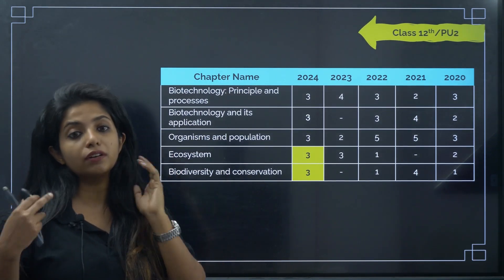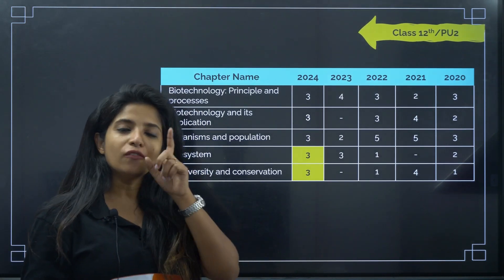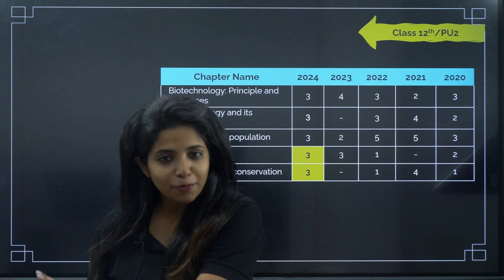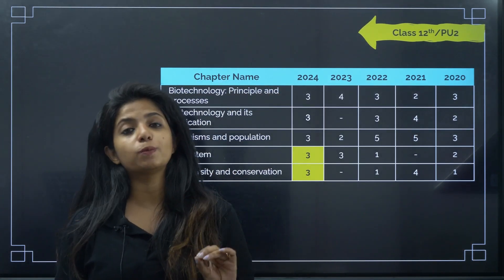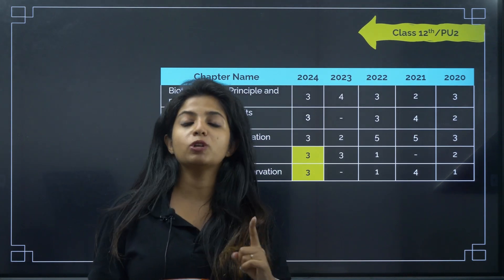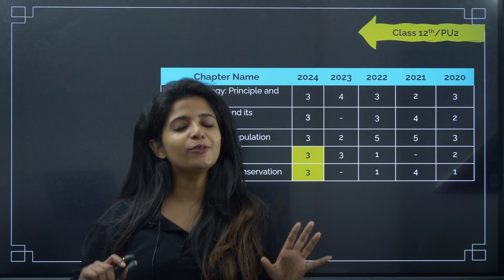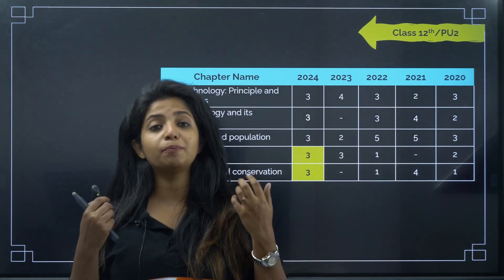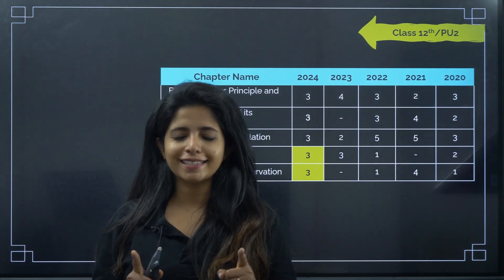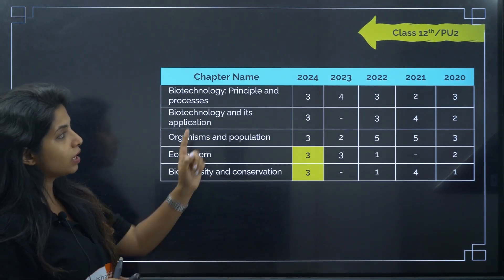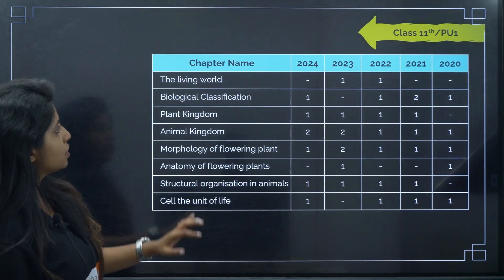Some chapters may give recurrent questions every year, but that does not mean you should ignore others. You should make a proper study plan — a weekly schedule. I have a separate strategy video for biology that you should watch; it covers what to study week by week and has a weekly timetable. This chapter weightage slide covers all 12th grade chapters, so please take a screenshot.